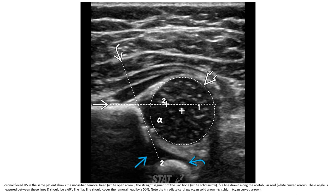This is the coronal flexion ultrasound image in the same patient. We can identify the ossified femoral head, the straight segment of the iliac bone, and a line drawn along the acetabular roof. The alpha angle is measured between these lines and should be more than 60 degrees. The bony acetabular roof should cover the femoral head by more than 50 percent.